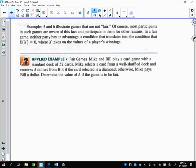Examples 5 and 6 illustrate games that are not fair. Most participants in such games are aware of this fact and participate for other reasons—to have fun or whatever, or there's a chance of winning. In a fair game, neither party has an advantage, a condition that translates into this: if you want a fair game, your expected value should be zero, because if it's negative or positive, it means someone's more likely to win—it's not averaged out.